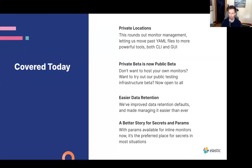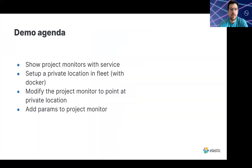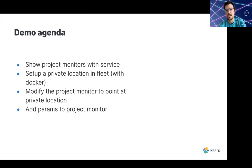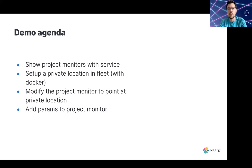With that, I'm going to hand it over to Justin and we'll get into the demo. So what we're going to cover today: we're going to set up some project monitors using the init command that the Synthetics Library supplies for getting started quickly. You basically run this command and it takes care of setting everything up for you. Before we do that, we're going to show how to create a cloud deployment, set up a fleet server, and enroll a GCP instance as a private location using Fleet. We'll also show how to add parameters to your project monitor so you can pass custom values when running your scripts.